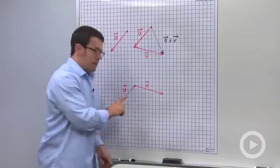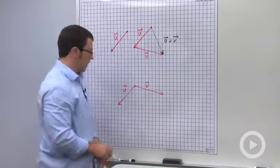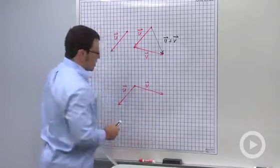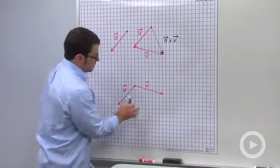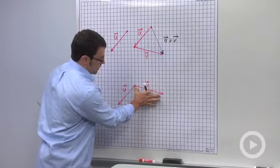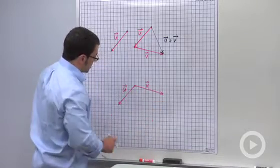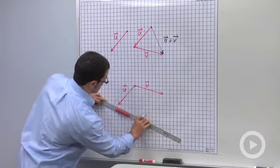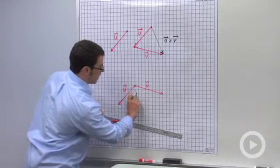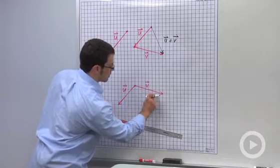Now, imagine that these are two sides of a parallelogram. And you want to complete the parallelogram. The way you do this is you duplicate this vector down here and duplicate this vector over here. So that looks like this. Now this vector goes down 1 over 1, 2, 3, 4.